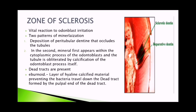The odontoblastic process is also occluded by deposition of cytoplasmic dentine in the odontoblast. Dead tracks may be seen running through the zone of sclerosis. They are the result of death of odontoblasts at an early stage in the carious process. The empty dentinal tubules contain air and the remains of the dead odontoblast process, and such tubules cannot undergo sclerosis.